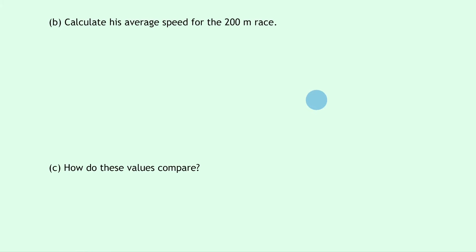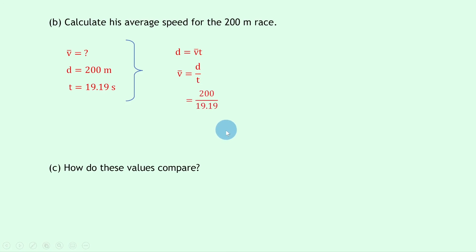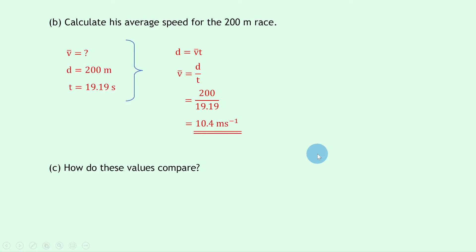Part b then says to calculate his average speed for the 200 meter race. We're going to do the same as in part a but just swap out some of the numbers: v-bar equals question mark, distance is 200 meters, and the time is 19.19 seconds. Writing down our equation for average speed: d equals v-bar times t. Rearranging for v-bar, we divide both sides by t to get v-bar equals d over t. Substituting in the numbers we get 200 divided by 19.19, which gives an answer of 10.4 meters per second again to one decimal place.